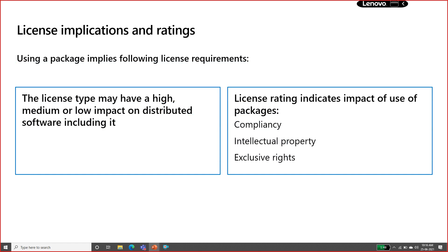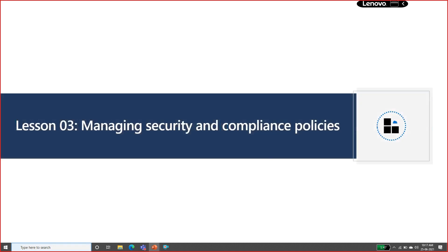When looking at license implications and ratings, make sure the license has a medium or low impact for the distribution of the software. It should allow you to distribute your software, you should get compliance approval, and you should verify your license rights before utilizing those licenses in your application.